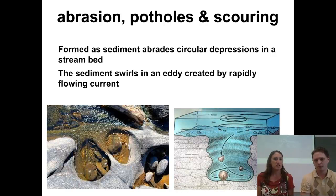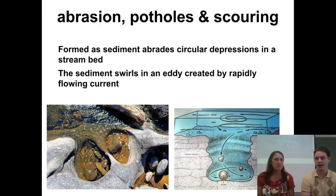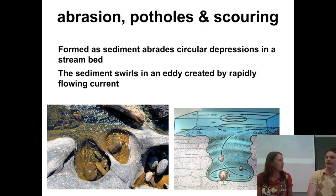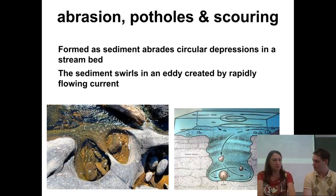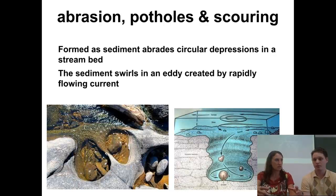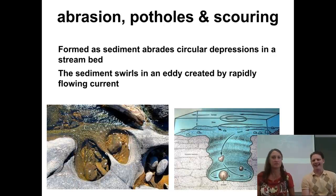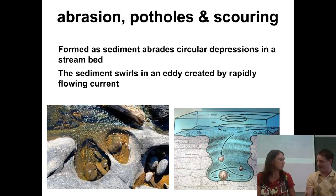So here's a little more on abrasion. We get some features called potholes, and those happen by scouring. We actually saw this at Camp Sagawa — after we went down the stairway into the canyon, in the floor of the stream we were walking through in the canyon, there were those circular holes. Those were the potholes. And I think how we got those huge potholes is actually under debate right now.